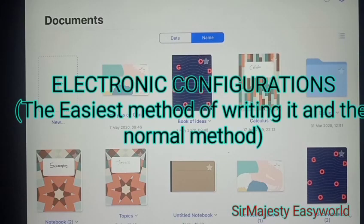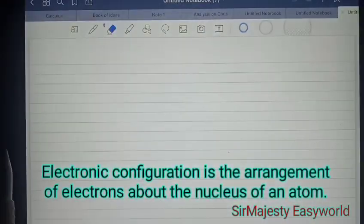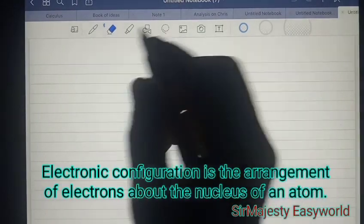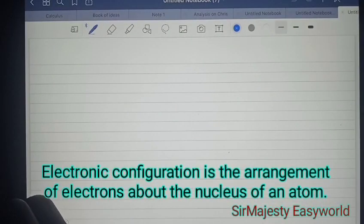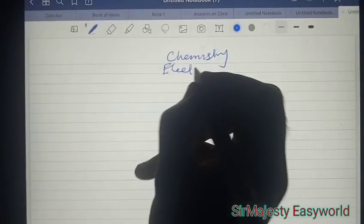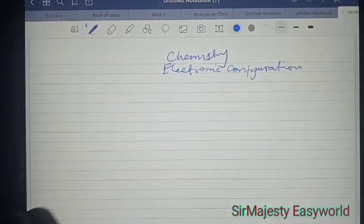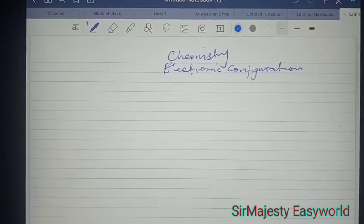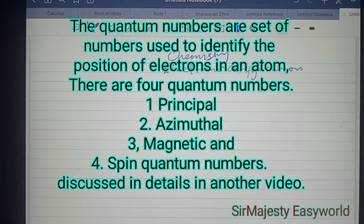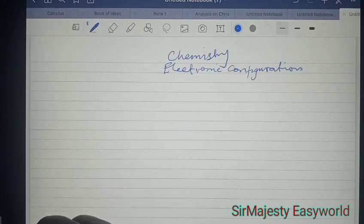Welcome to today's class. In our chemistry today, we'll take a look at electronic configuration. Electronic configuration actually is the pattern of arrangement of the electrons around the nucleus of an atom. Our topic is electronic configuration.